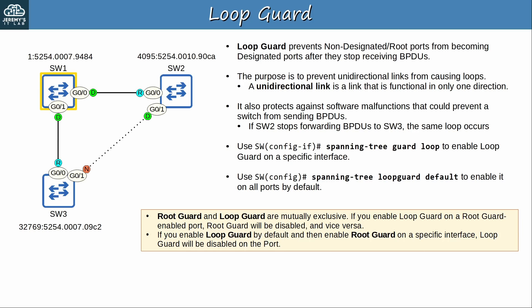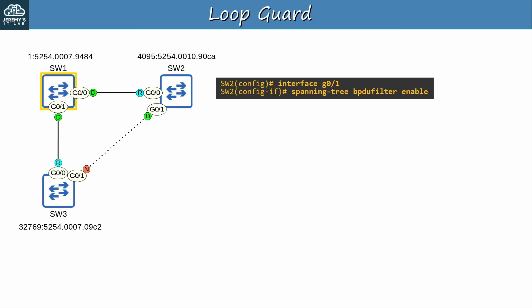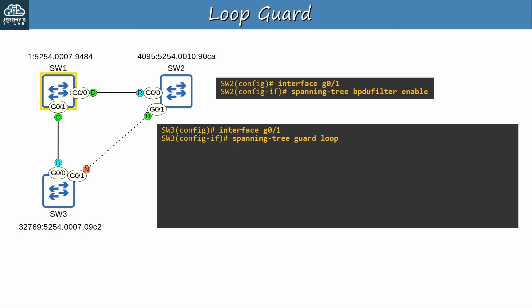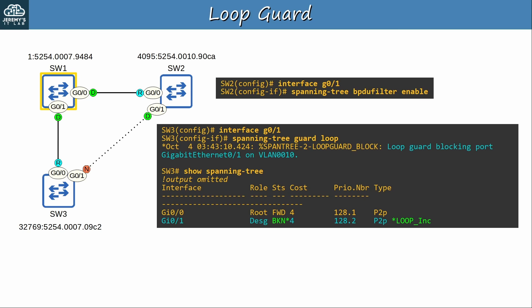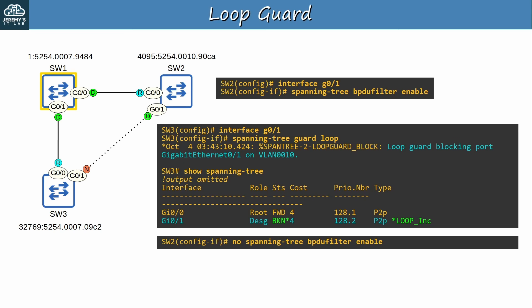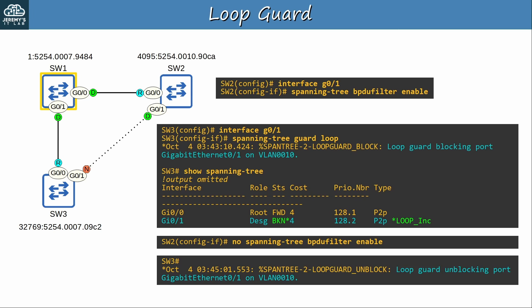The reason they're mutually exclusive is that they serve two very different purposes: RootGuard blocks a port if it starts receiving superior BPDUs, while LoopGuard blocks a port if it stops receiving BPDUs. I enabled BPDU filter on SW2 G0/1 so it stops sending BPDUs, and then enabled LoopGuard on SW3 G0/1. After G0/1's max age timer expired, a log message appeared: 'Loop guard blocking port G0/1 on VLAN 10.' The port's status becomes broken in a loop inconsistent state. Once the problem is gone, the port immediately becomes functional again — confirmed by disabling BPDU filter on SW2 G0/1.